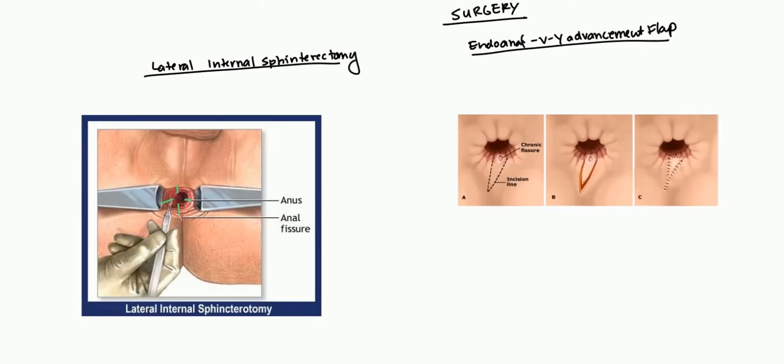In the Endoanal VY Advancement Flap, you're not making any cuts actually on the internal sphincter. What you're doing is you're making an incision outside, like a V-shaped incision right there on the outside of the actual anal canal. Then you're pushing up this V-shaped incision up over the actual fissure. Then you stitch at the bottom there and to make it a Y shape, as you can see, you're going to shape at the bottom and then at the side right there, and then you end up getting this Y-shaped stitch. And that's why it's called the VY Advancement Flap, because first you have a V and then you end up with a Y. And this can help cover up the fissure and then hopefully lead to healing.